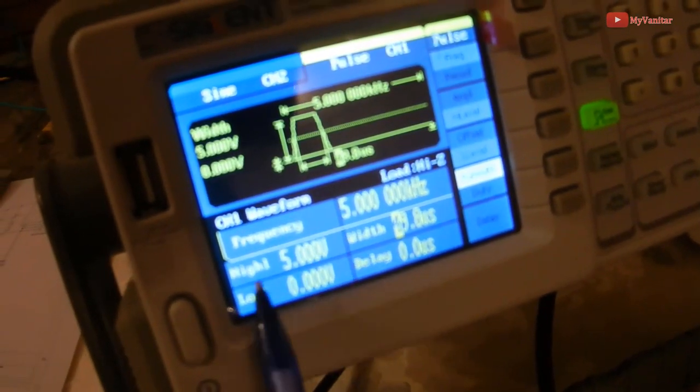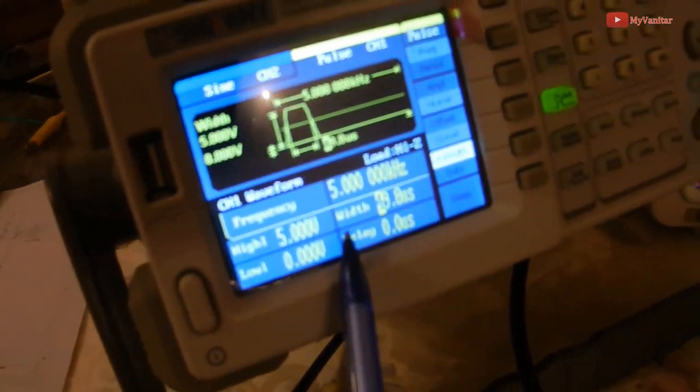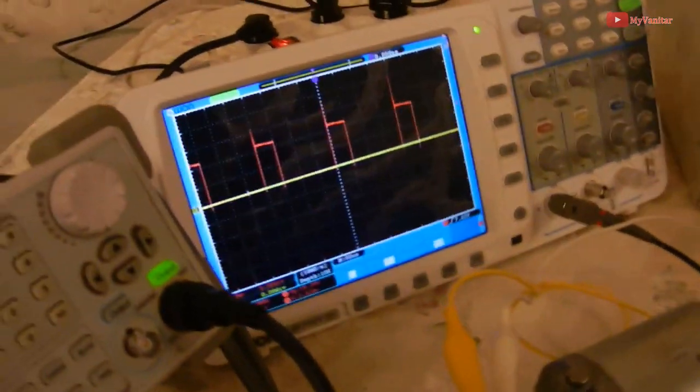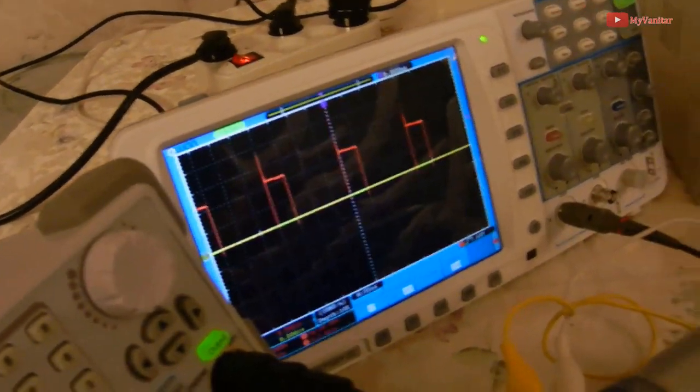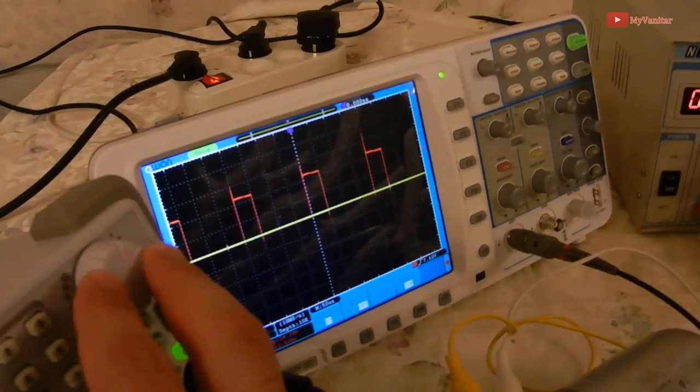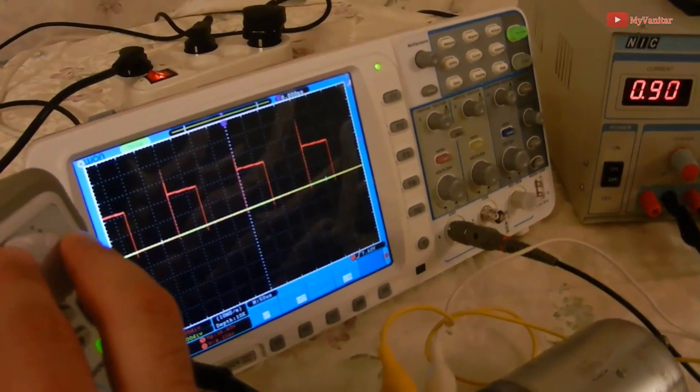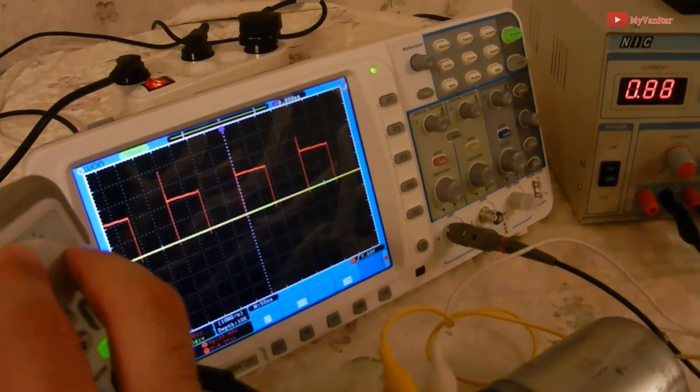If I increase the duty cycle of the PWM, of course the current draw and the speed of the motor should increase. So let's check. You see that now it goes to around one amp.